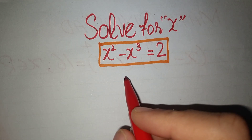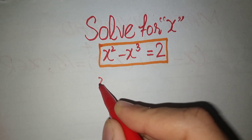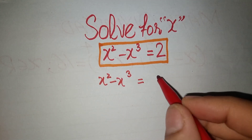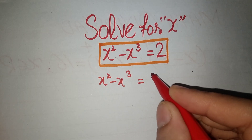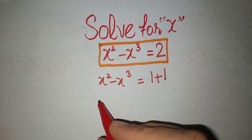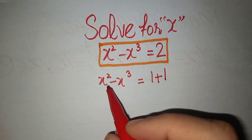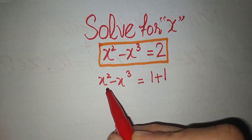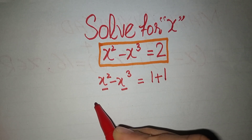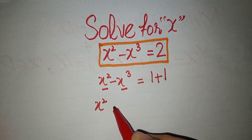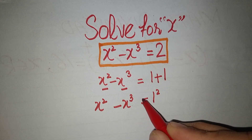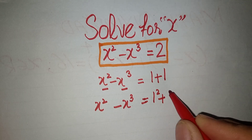First of all we separate these terms: x squared minus x cubed is equal to 2. We can write 2 as 1 plus 1. Now we have to express these terms using the square formula and cubic formula, so we write x squared minus x cubed is equal to 1 squared plus 1 cubed.